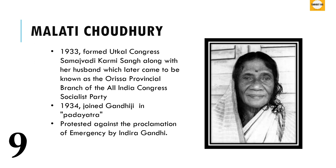Next is Malati Choudhury. In 1933 she formed the Utkal Congress Samajwadi Karmi Sangh along with her husband, which later came to be known as the Orissa provincial branch of the All India Congress Socialist Party. In 1934 she joined Gandhiji in his famous Padyatra in Orissa. She also protested against the proclamation of emergency by Indira Gandhi and was eventually imprisoned.